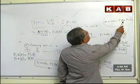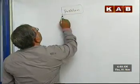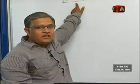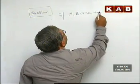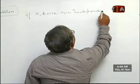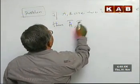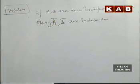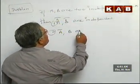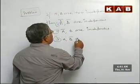The probability of A intersection B is equal to probability of B into probability of A given B. The problem as such may not be asked in the exam, but questions based on conditional events surely utilize this result. The problem is: if A and B are two independent events, then prove that A̅ and B̅ are independent, A̅ and B are independent, and A and B̅ are independent.